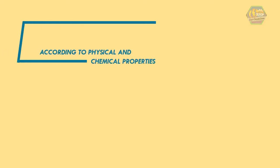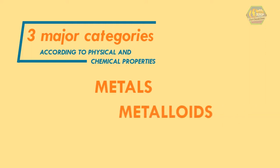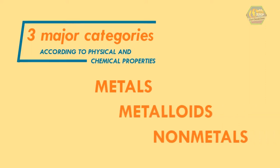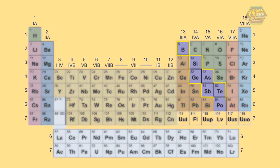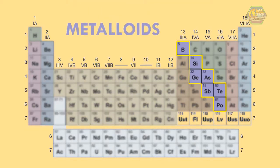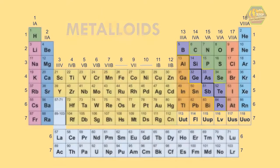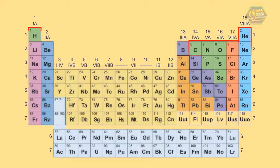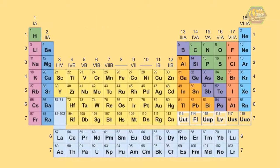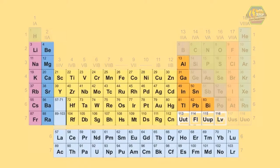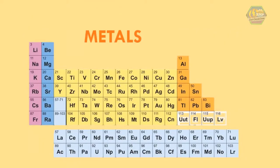According to their shared physical and chemical properties, the elements can be classified into major categories of metals, metalloids, and non-metals. The elements boron, silicon, germanium, arsenic, antimony, tellurium, and polonium are called metalloids. Elements above the line formed by metalloids are non-metals, including hydrogen. Lastly, the rest are all metals.